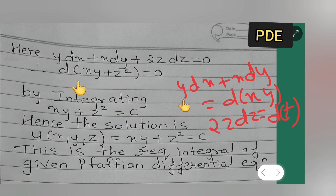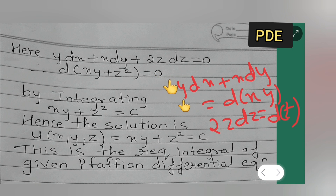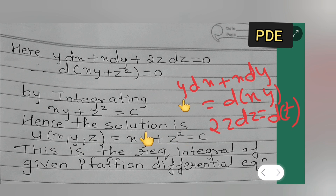Now integrating, we get xy plus z² equals 0 plus C, where C is a constant. So on integrating, the solution is u(x, y, z) = xy + z² = C. This is the required integral of the given Pfaffian differential equation.